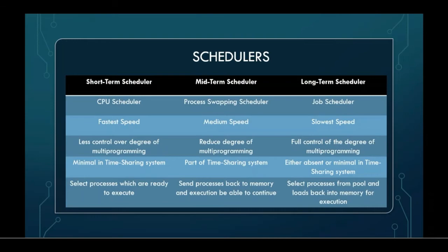Short-term scheduler is called the CPU scheduler. Mid-term scheduler is called the process swapping scheduler, while the long-term is called the job scheduler. In terms of speed, it decreases from short-term to mid-term to long-term. In terms of degree of control over multiprogramming, it increases from short-term to mid-term to long-term.